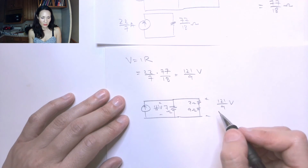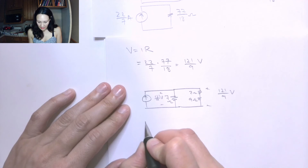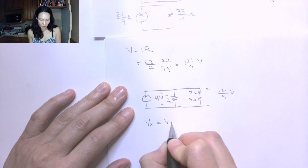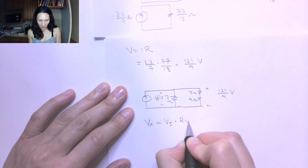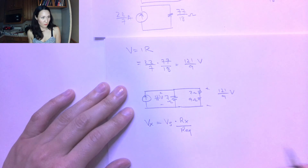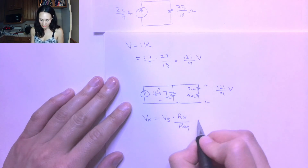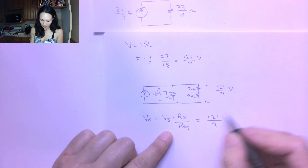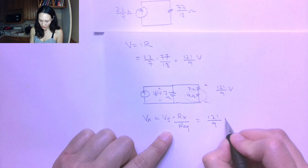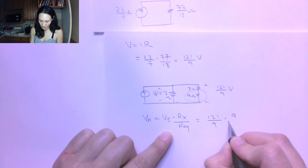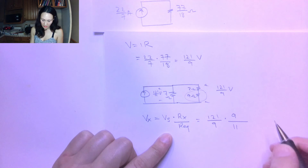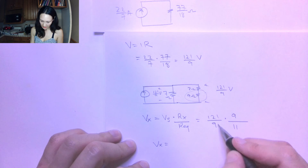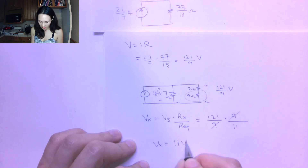I can do a simple voltage divider: Vx equals V-source times Rx over R-equivalent. I'm providing 121/9 volts, the resistor in question is 9 ohms, and R-equivalent is 11 ohms. Making this simplification, terms cancel, and Vx equals 11 volts.